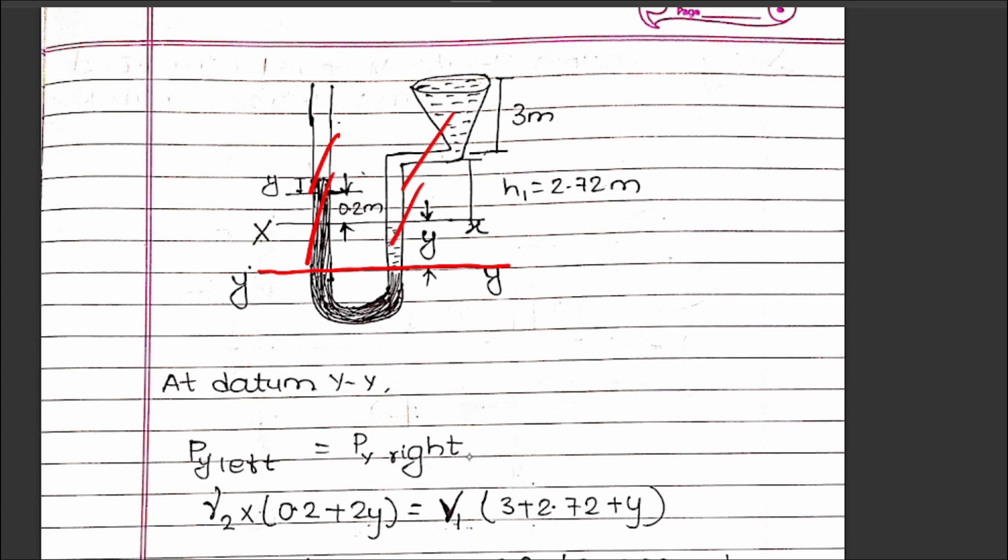P_left equals P_right. Left side pressure: gamma₂ times (0.2 + 2y). Right side pressure is from water column: gamma₁ times (3 + 2.72 + y). So gamma₂(0.2 + 2y) = gamma₁(3 + 2.72 + y).